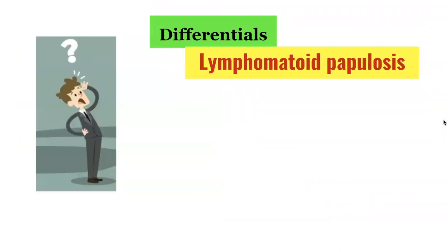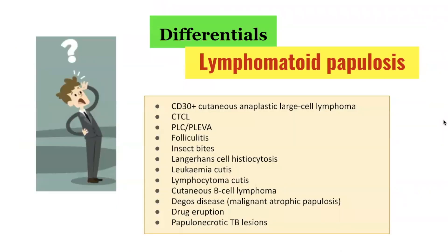In terms of differentials, small recurrent LYP lesions on the trunk are frequently misinterpreted as folliculitis or arthropod bites for many years, notably because CD30 positive cells can be observed in many benign conditions. On the other hand, because of multifocal skin lesions with histological features of CD30 positive cutaneous T-cell lymphoma, LYP patients are often unnecessarily treated with multi-agent chemotherapy, particularly when treating teams are not familiar with this condition.